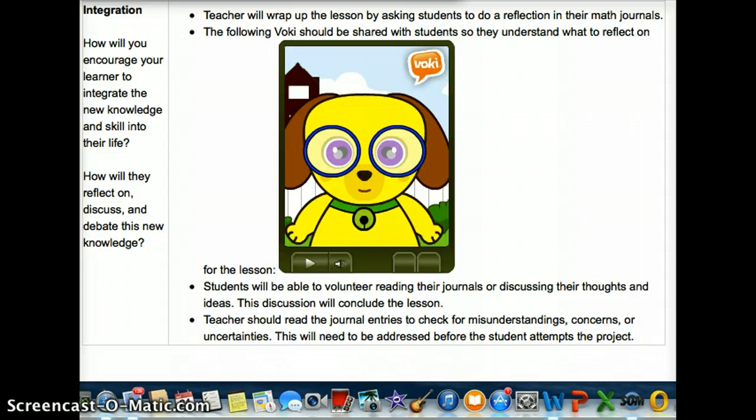The way we will wrap up this lesson is by having the students write in their math journals a reflection about the lesson. We're going to use this Voki and all you have to do is press play here. And that gives the prompt for the students. It suggests questions that they should answer in their reflection. It just pushes them a little bit more and gives them a little bit more direction as to what we're looking for in that reflection. After that, five or eight minutes or so of writing, students will be able to volunteer reading their journals or discussing their thoughts and ideas. And this will conclude the lesson.